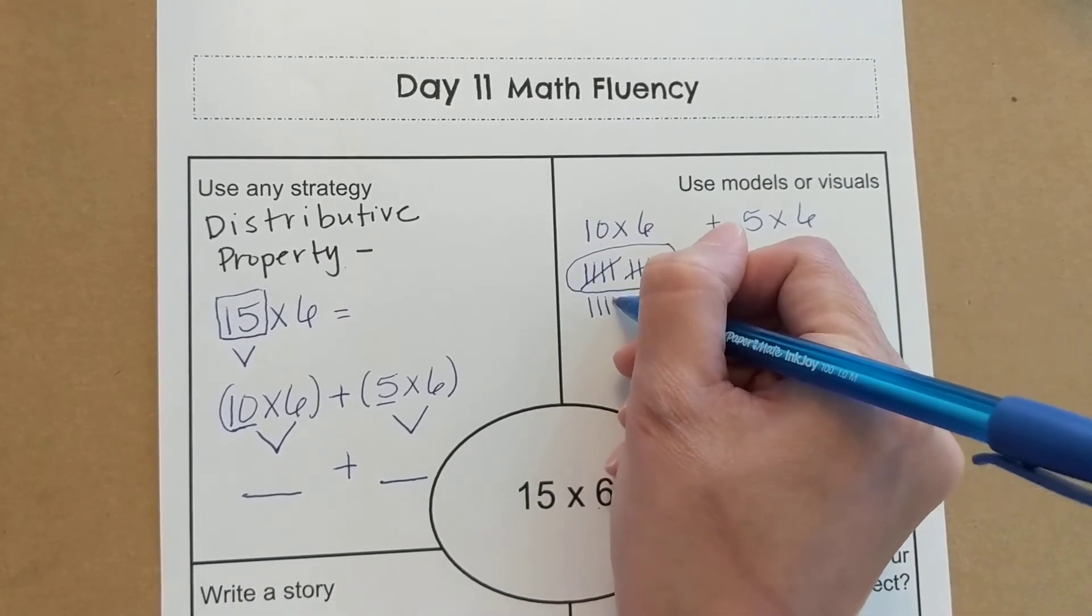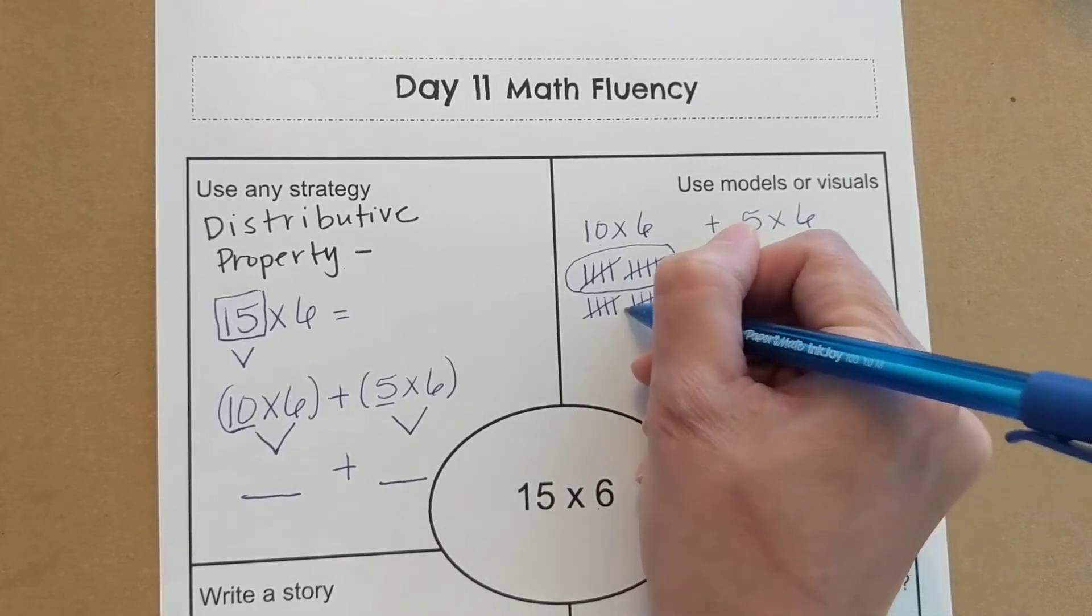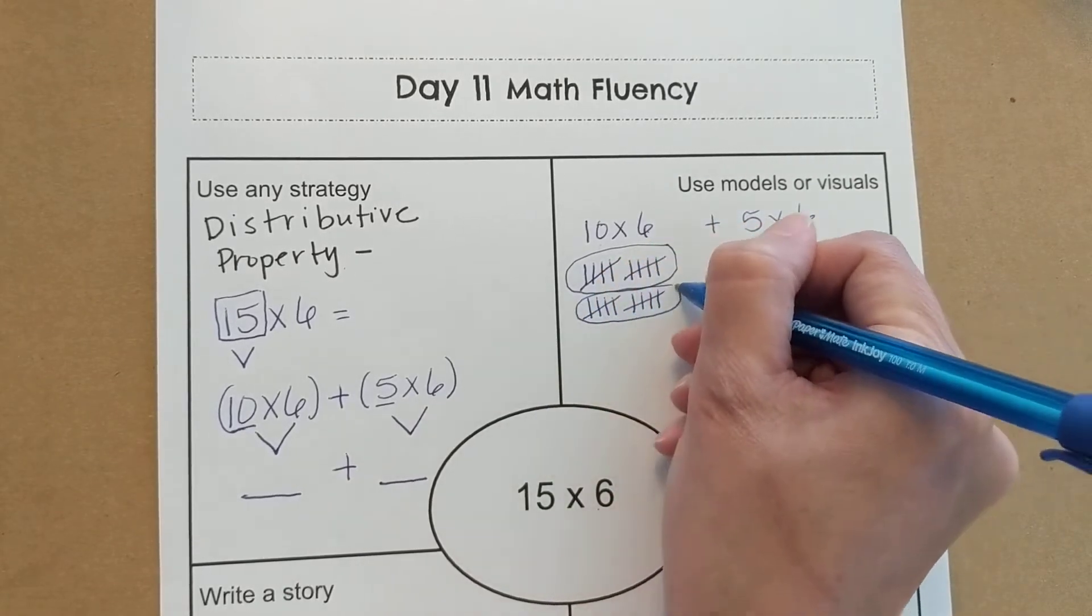1, 2, 3, 4, 5, 6, 7, 8, 9, 10. I'm just using tally marks, 2 groups of 10.